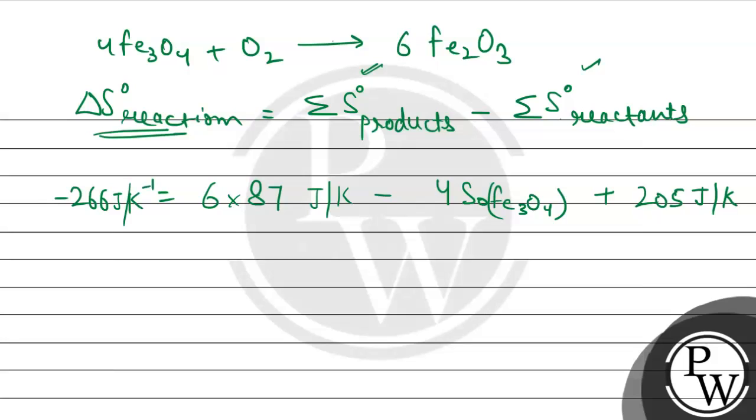Now let us rearrange the same, so the standard entropy for Fe₃O₄, it will be equal to, we will take this to the left hand side, so it will be plus 4, and 6 multiplied to the 87.